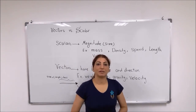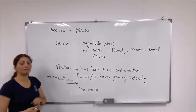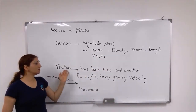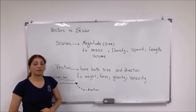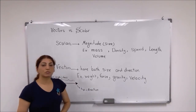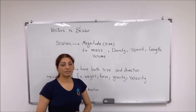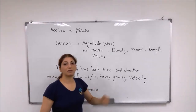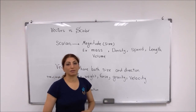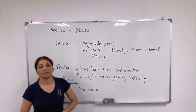And here we have vector quantities — quantities that are measured and have both size and direction. For example, like weight, force, gravity, and velocity. These are examples of quantities or properties of matter that we measure.